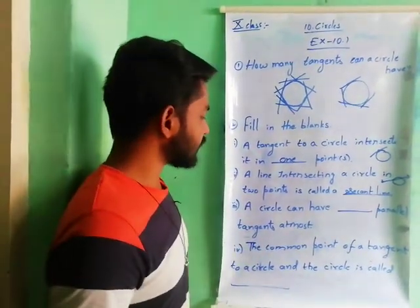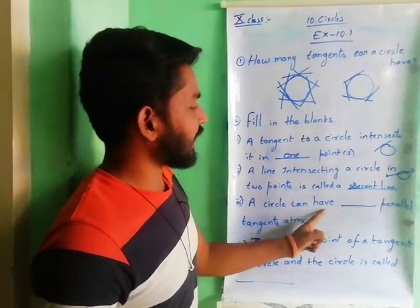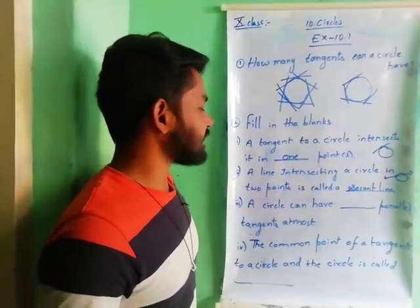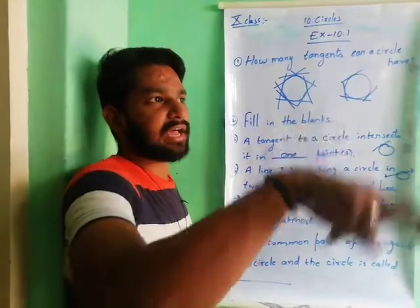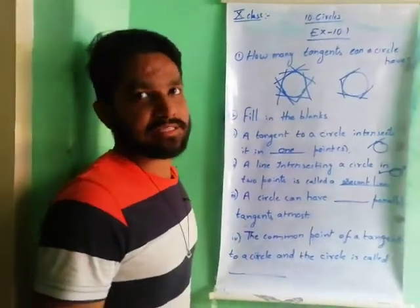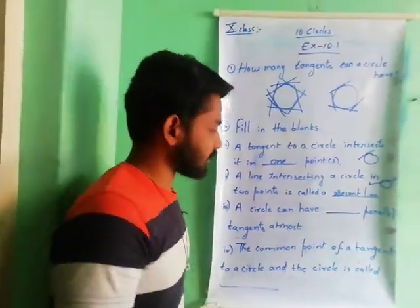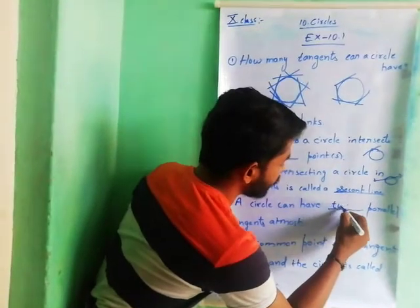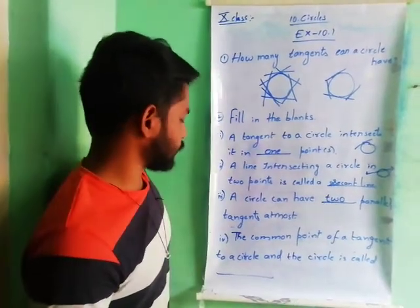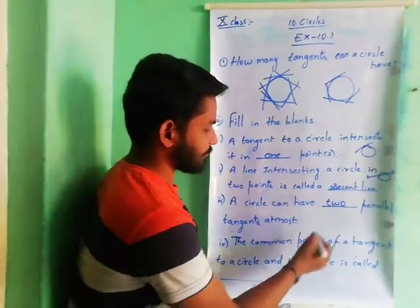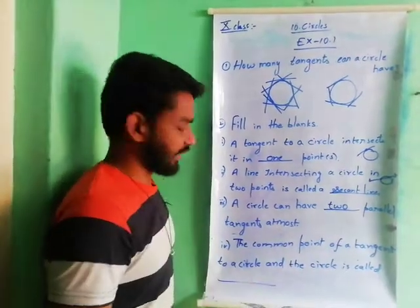Third one: a circle can have how many parallel tangents at most? A circle can have two parallel tangents at most, at the ends of the diameter.